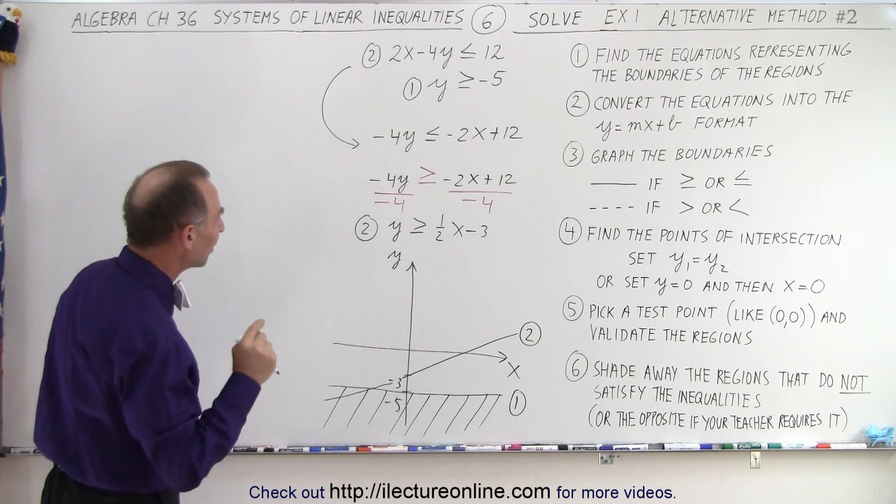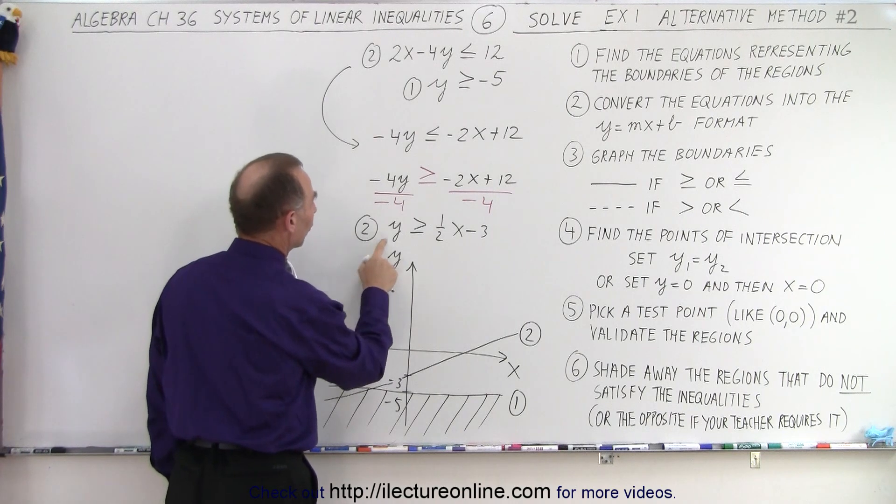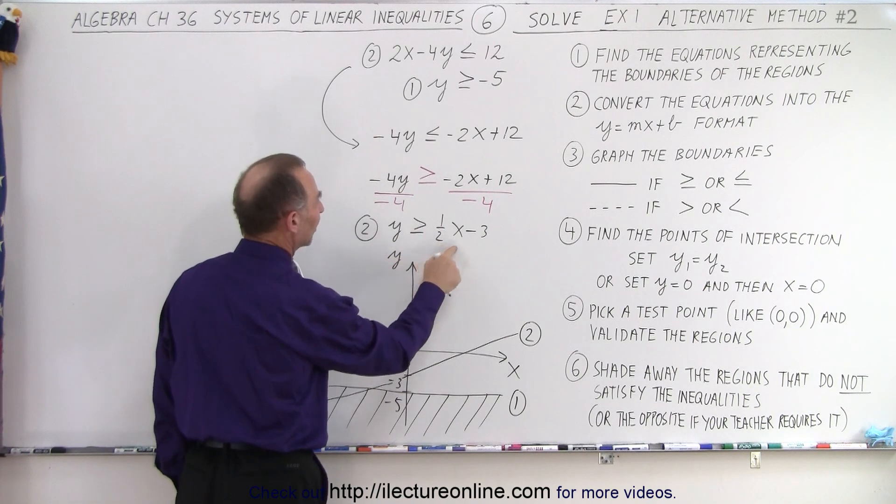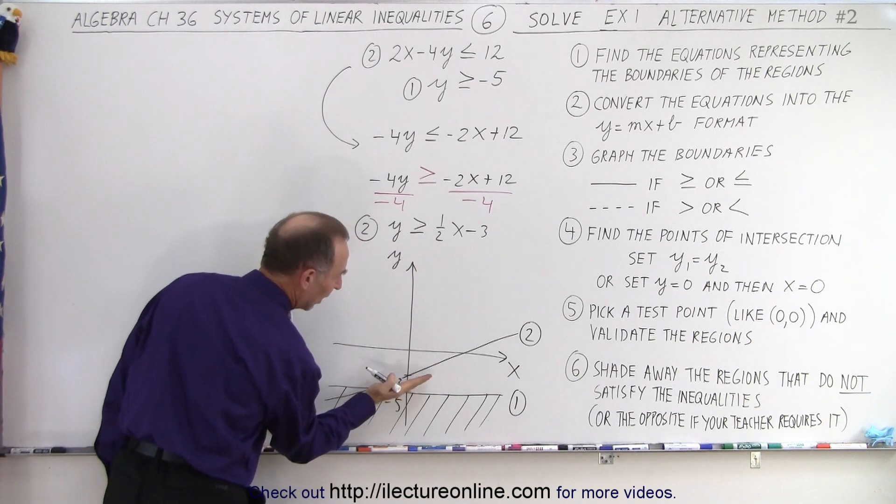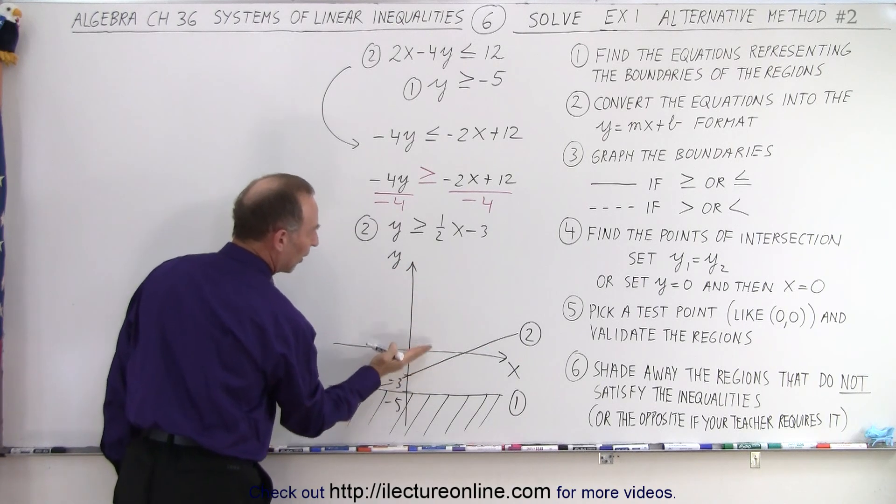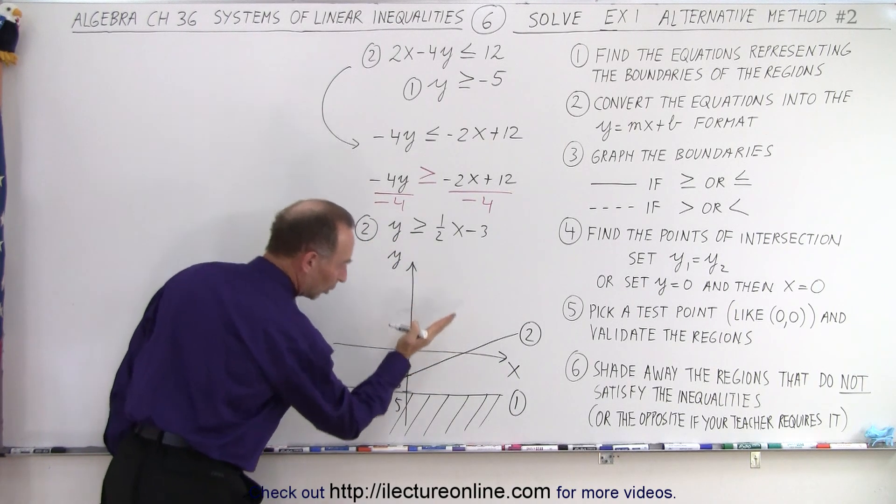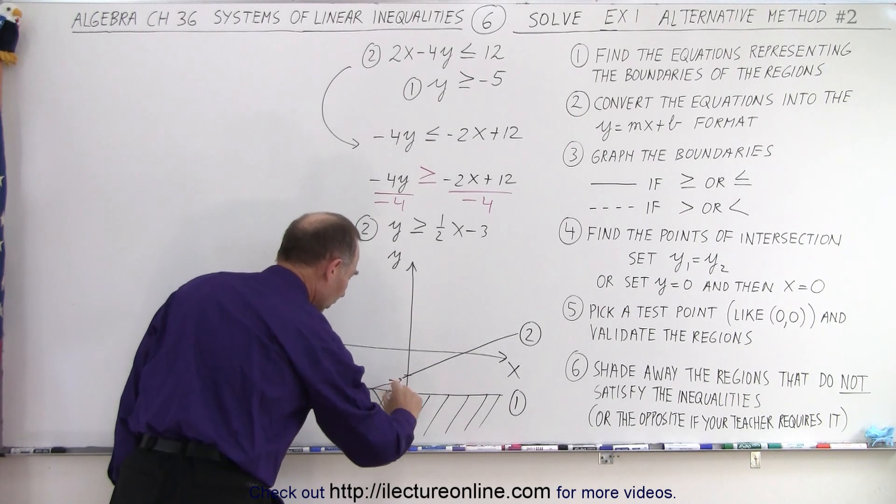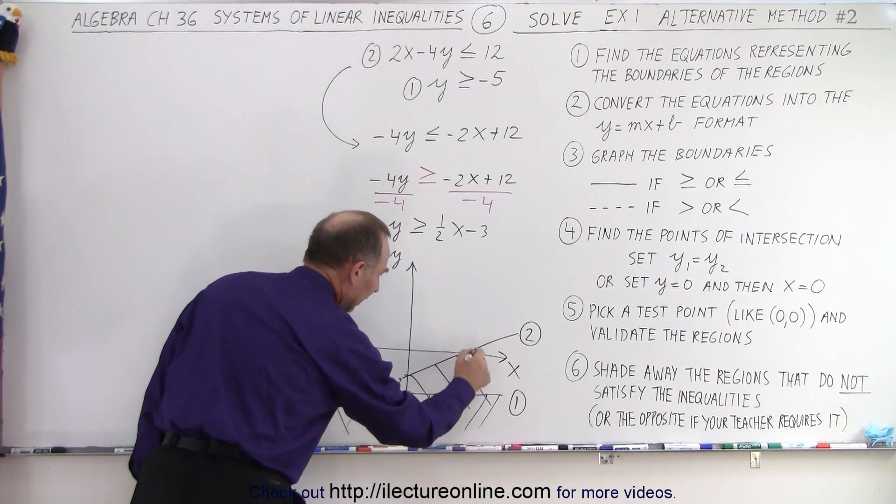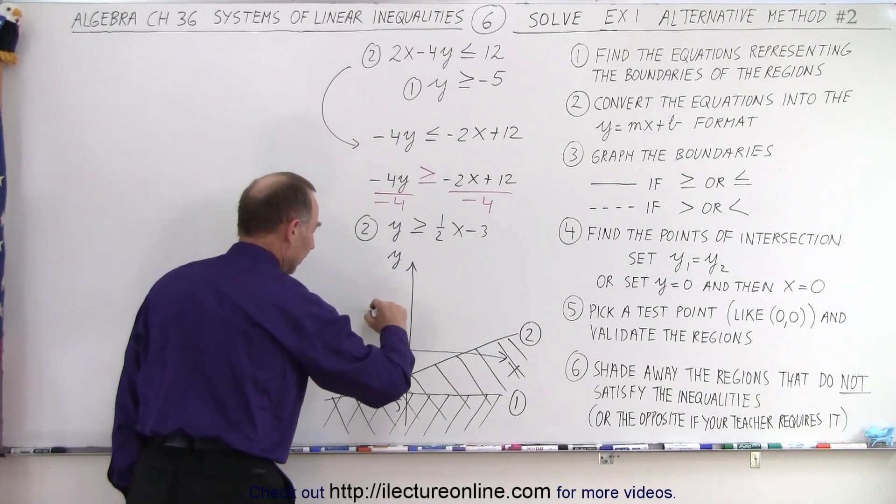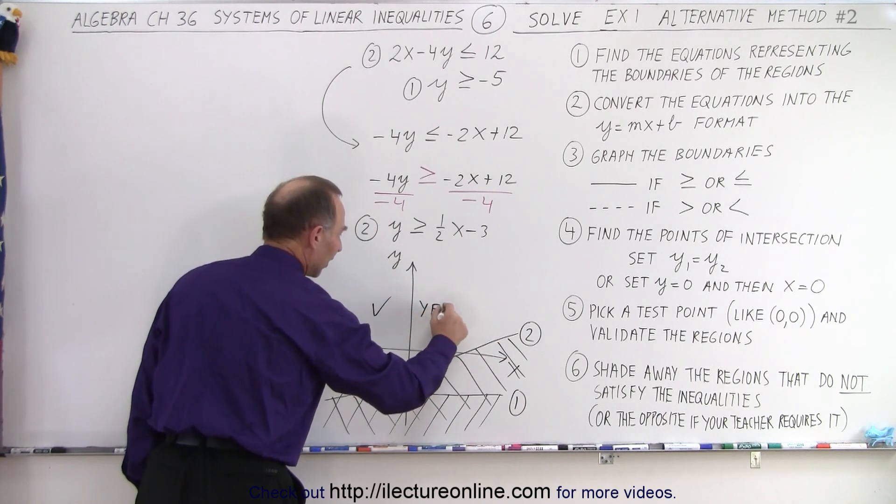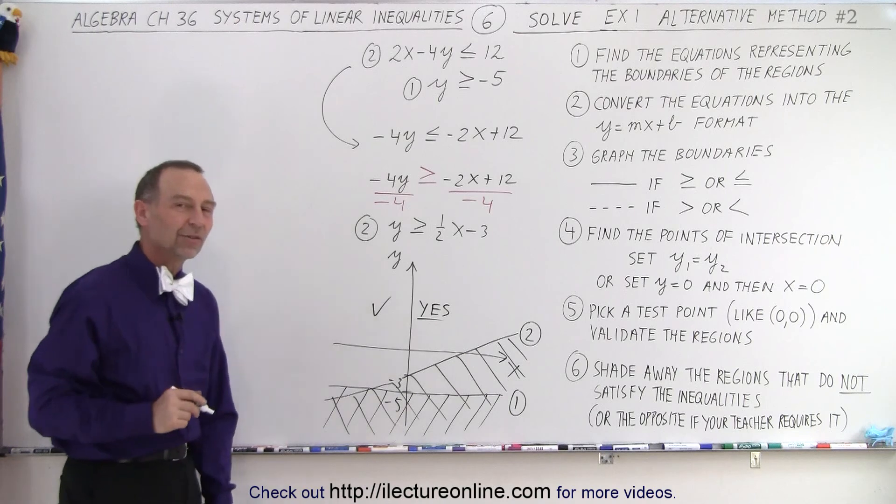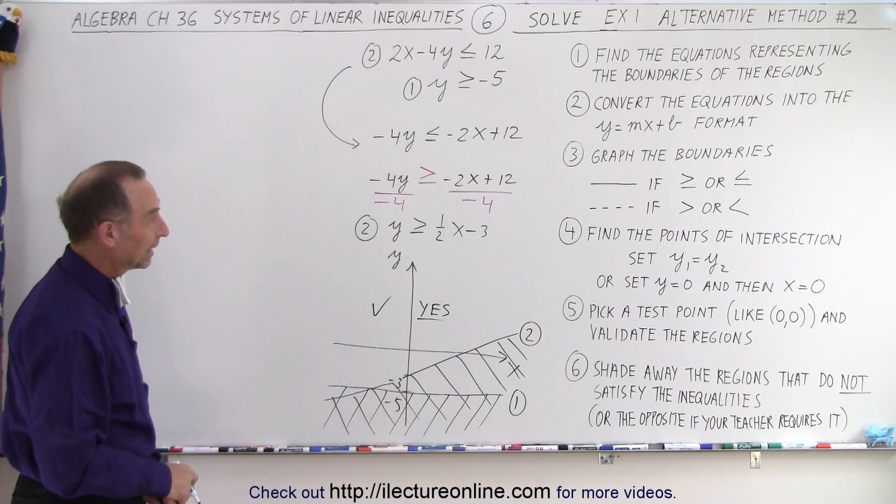And then for number two, we're looking for y being greater than ½x - 3. Again, y is greater above the line, so above the line would be the region we're looking for. Below the line we're not looking for, so we cross out below that line. Then the region that's remaining is the region that's not marked. So this is the region that satisfies both inequalities at the same time. It is a little faster—I still like my other way better.